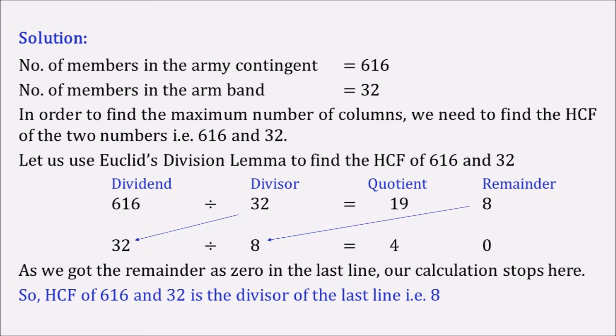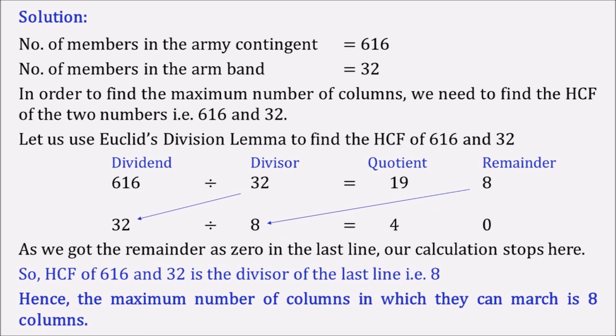So HCF of 616 and 32 is the divisor of the last line that is 8. Now hence we can easily say that the maximum number of columns in which the army band or the army members can parade is 8 columns.